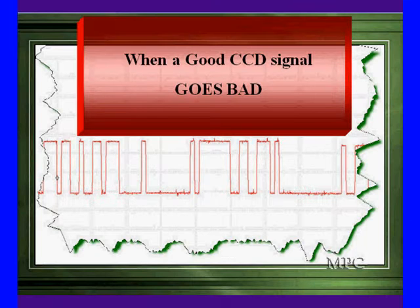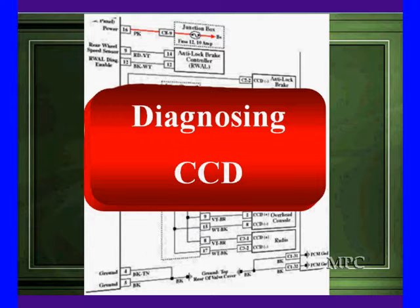Let's take a look at things. When a good CCD signal goes bad, it gives us some very definite patterns. We need to understand the failures, because understanding these failures is going to help us diagnose CCD.